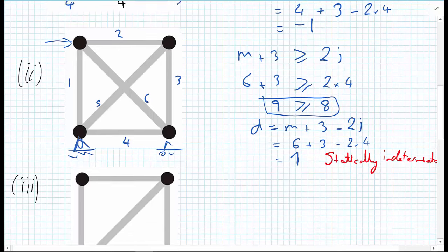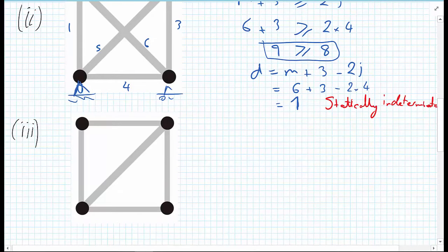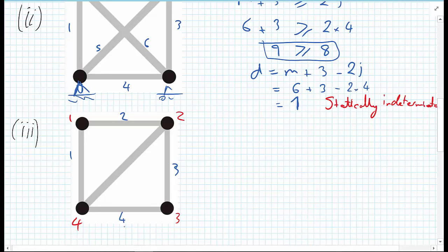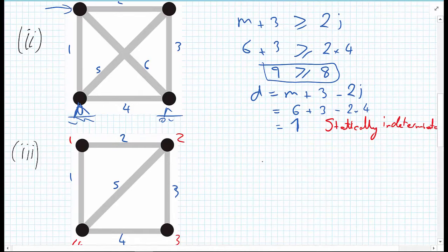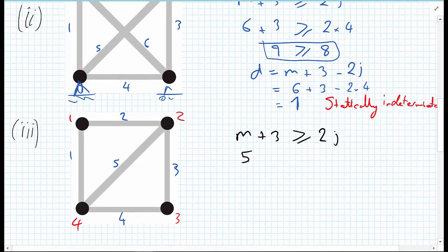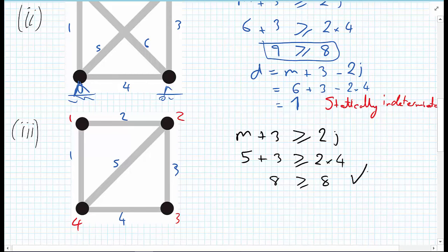Moving on to another example — almost the same truss but now with just one cross member. The number of joints is still 4, and the number of members is now 5. Applying the formula: M plus 3 must be greater than or equal to 2J for stability. With 5 members: 5 plus 3 is greater than or equal to 2 times 4. So 8 must be greater than or equal to 8 — the stability criteria is satisfied and the structure is stable.